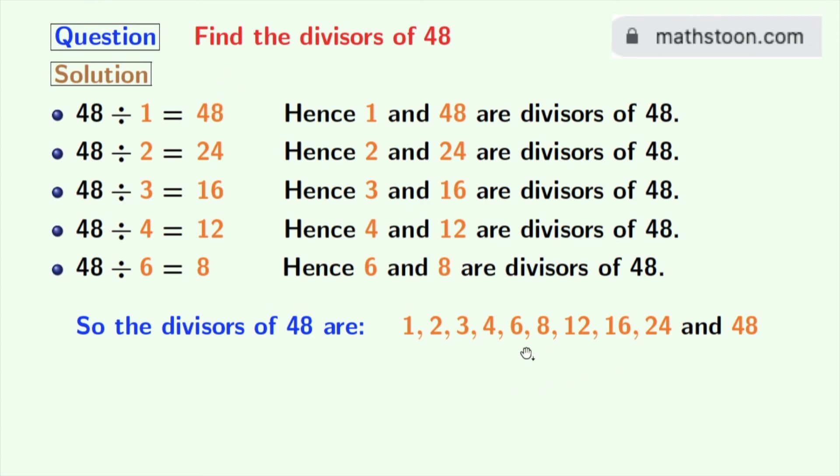Thus, the total number of divisors of 48 is 10. Now, if we look at these divisors, we can see that 2 and 3 among these numbers are prime numbers. Because these two numbers do not have any divisor other than 1 and that number itself. So, we can say that the prime divisors of 48 are 2 and 3.